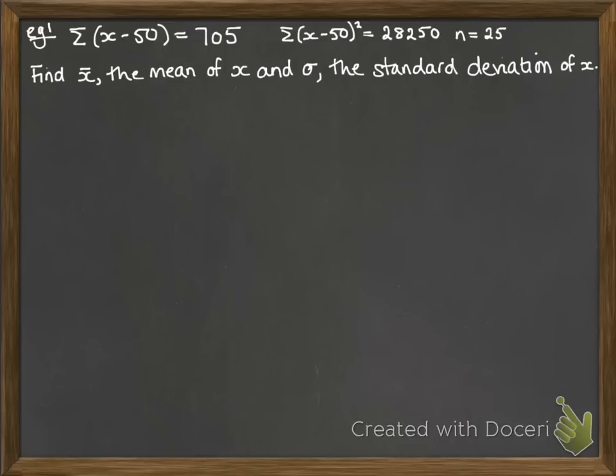So continuing on with that example, we do need a bit more information. So we're told the sum of x minus 50 is 705. The sum of x minus 50 squared, instead of telling us about x squared, is 28,250. And the number of items that we have is 25.